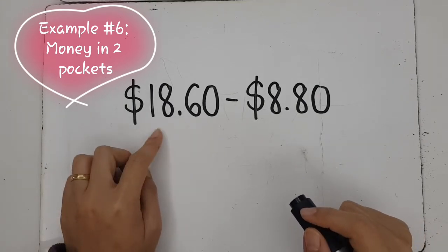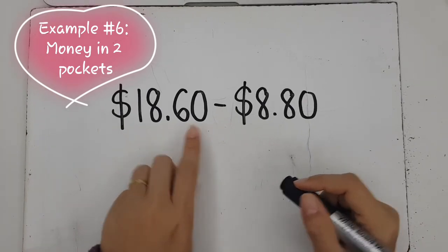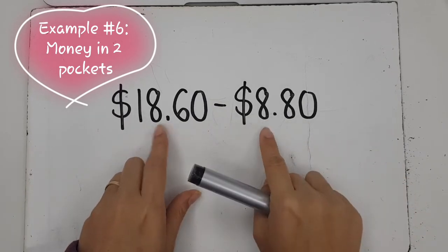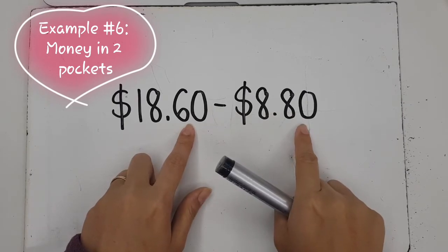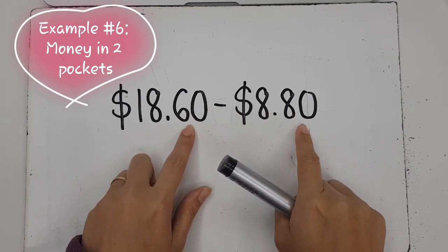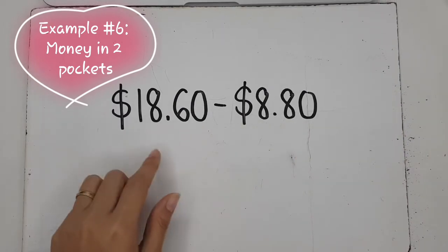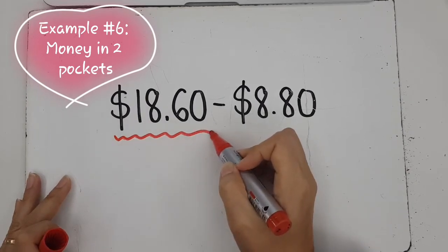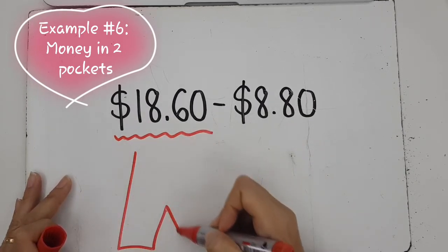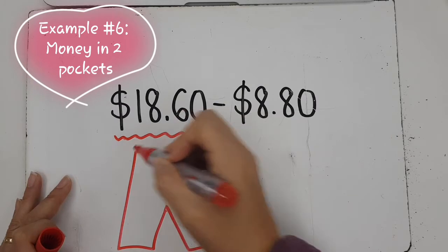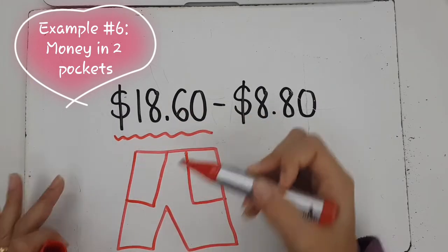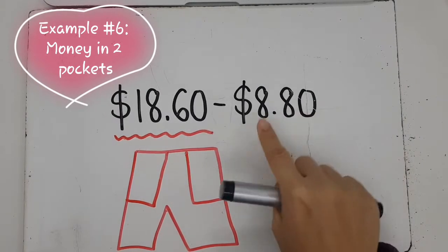So in this method, we have $18.60 and we are going to take away $8.80. As you can see, we can subtract the dollars but there is not enough cents, right? So you can either use the previous methods or you can use this one. In this one, we did a bit in school. We have $18.60, and I am going to split it between my two pockets. Let's say I have two pockets, one pocket here and one pocket there.